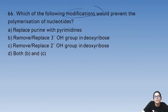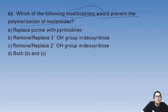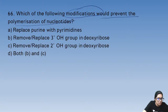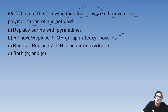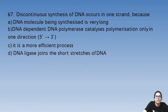Question 66: which modification would prevent the polymerization of nucleotides? Removing or replacing the 3'-OH group in the deoxyribose would prevent polymerization.